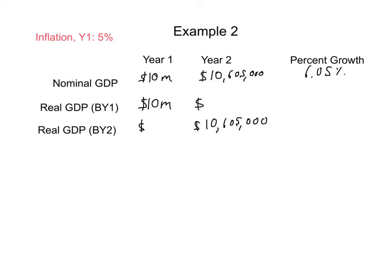But that's clearly going to be higher than what the real growth rate is. Let's instead use year one as our base year for measuring real GDP. Since we're using year one, nominal and real GDP will be the same in year one. So there we are, $10 million.